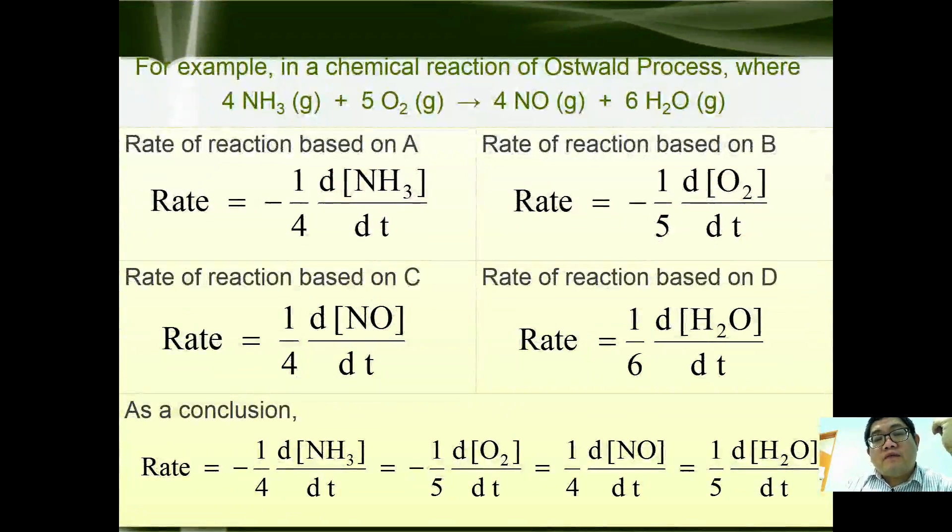For example, if we have 4NH3 + 5O2 gives 4NO + 6H2O gas, we have -1/4 d[NH3]/dt for ammonia. For oxygen, rate equals -1/5 d[O2]/dt. Concentration of nitrogen monoxide, we have 1/4 d[NO]/dt. And concentration for water is 1/6 d[H2O]/dt. So as a conclusion, we can put them together as: -1/4 d[NH3]/dt = -1/5 d[O2]/dt = 1/4 d[NO]/dt = 1/6 d[H2O]/dt.